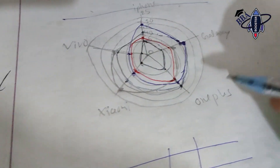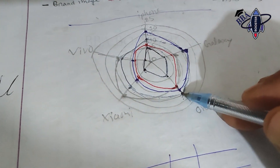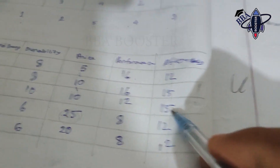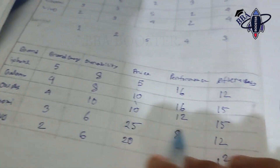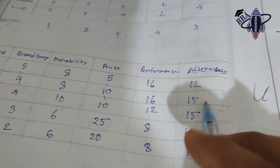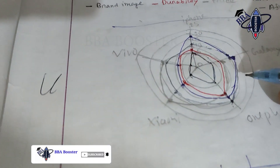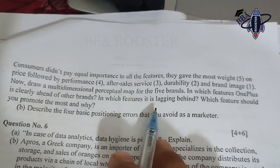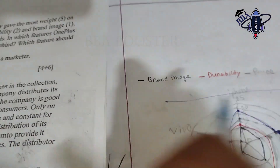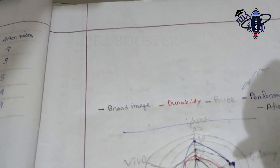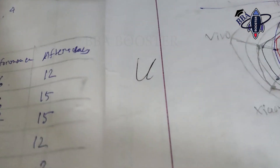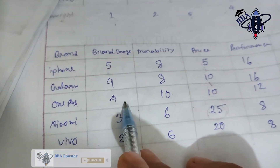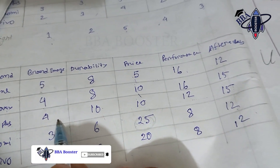For after-sales service, OnePlus is trailing behind Galaxy. After-sales is an area where OnePlus needs improvement, as Galaxy and others are performing better. OnePlus performance overall is strong, but after-sales service is lagging behind competitors.